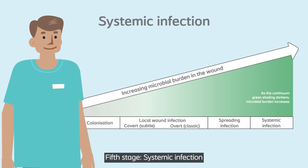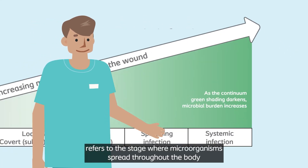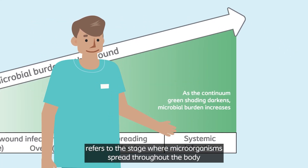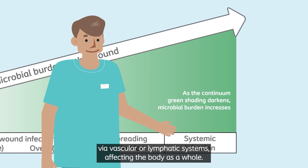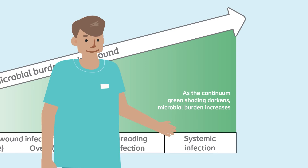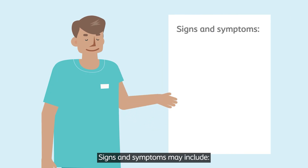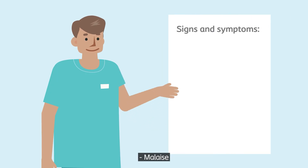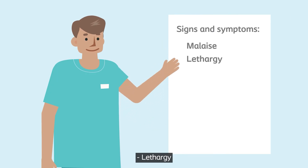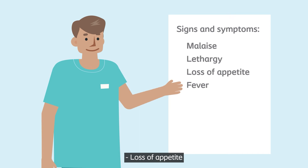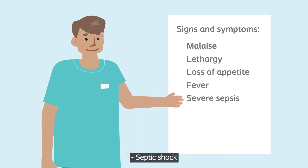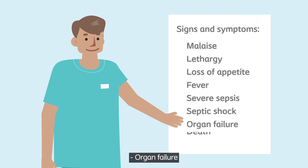Stage 5: Systemic infection refers to the stage where microorganisms spread throughout the body via vascular or lymphatic systems, affecting the body as a whole. Signs and symptoms may include malaise, lethargy, loss of appetite, fever, severe sepsis, septic shock, organ failure, and death.